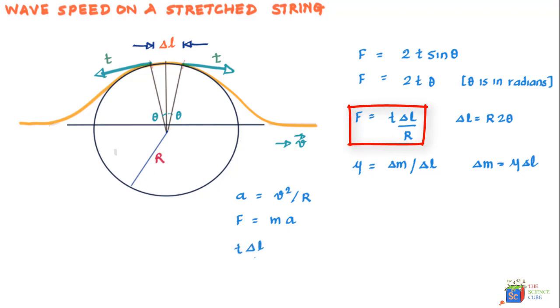Put the value of mass as μ × Δl and the value of acceleration as v² / R. What we can see is we get this equation where a lot of variables are cancelling—R cancels, Δl cancels—and eventually what we get is v = √(T/μ).